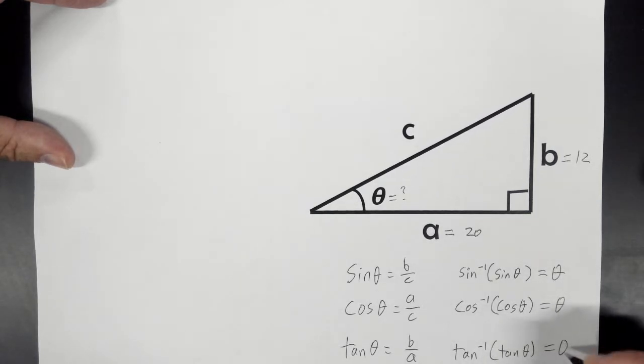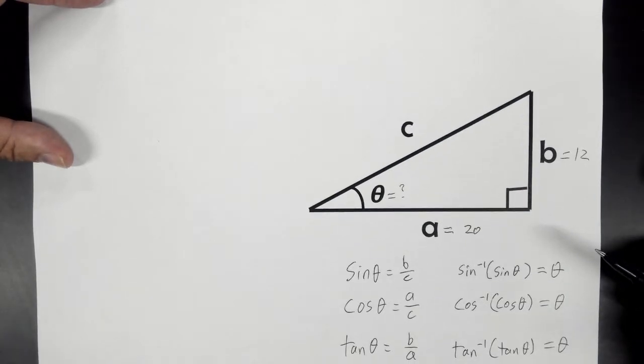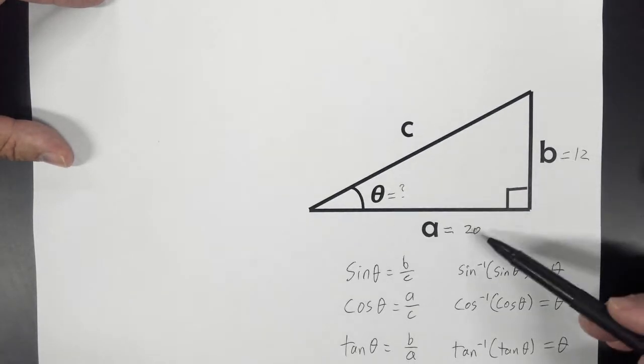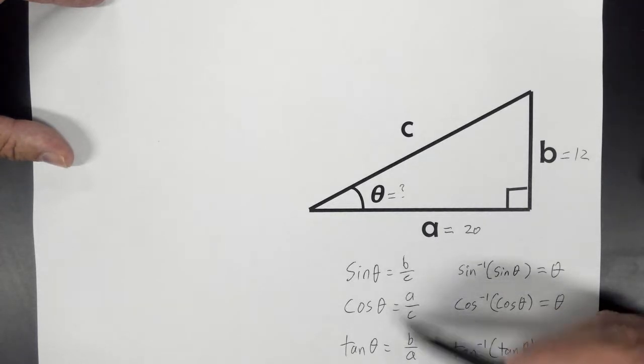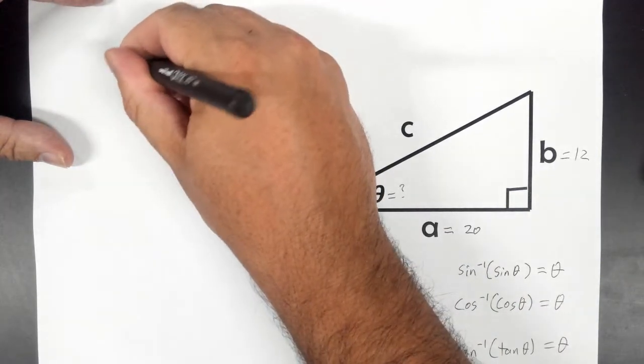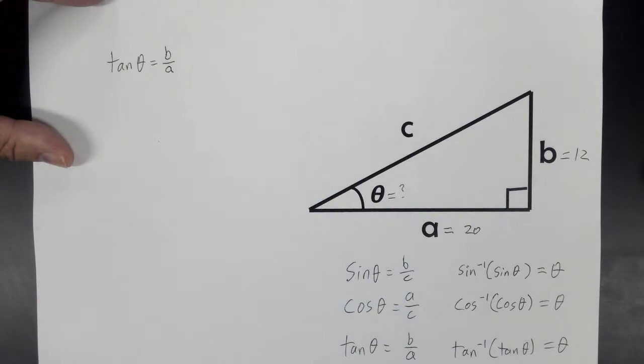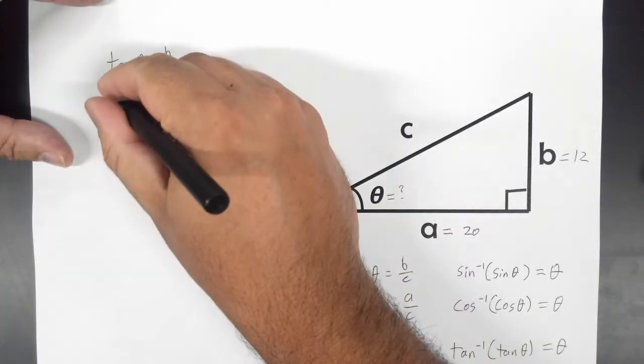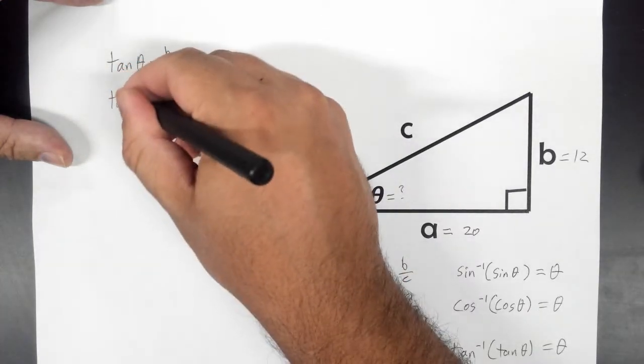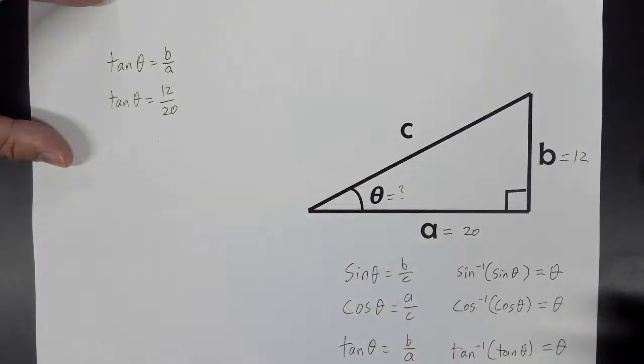So let's take this example. We want to find this angle. This time, we need two sides, which we actually know the length of. And so that would be a and b. And then we need to find one of these where we have both a and b. So that would be tangent. So I'll write the equation here: tangent theta equals b over a. And then I'll put in all the numbers that we know. Tangent theta equals 12 over 20.